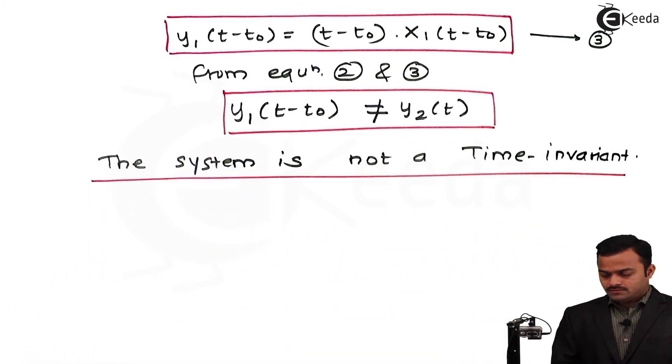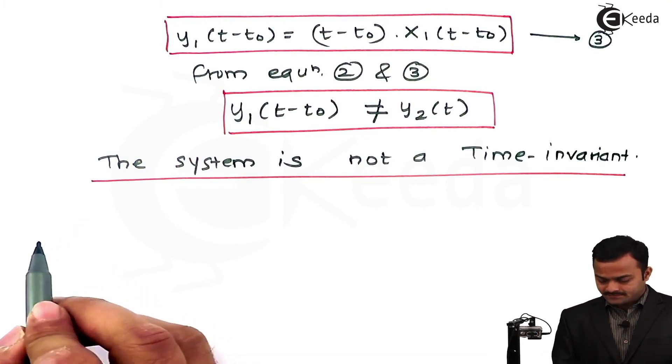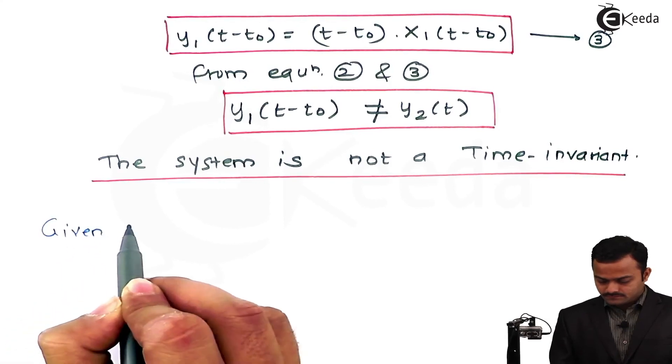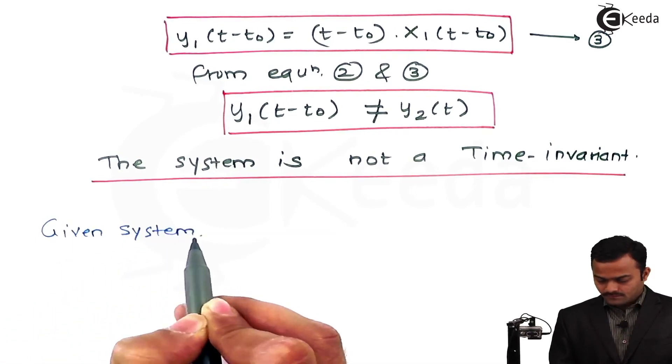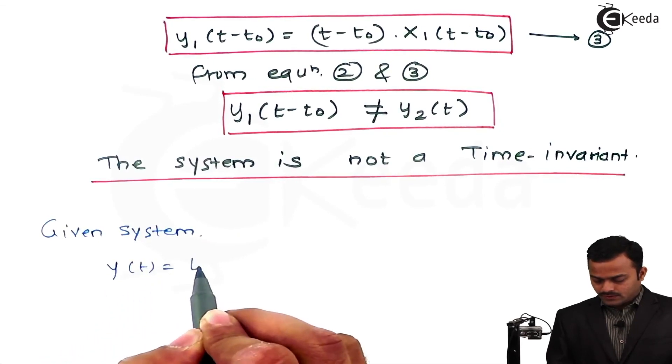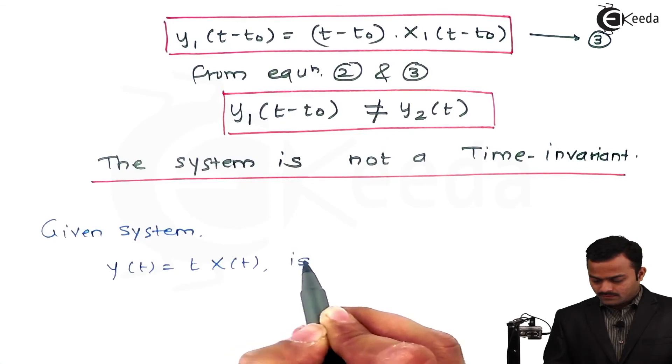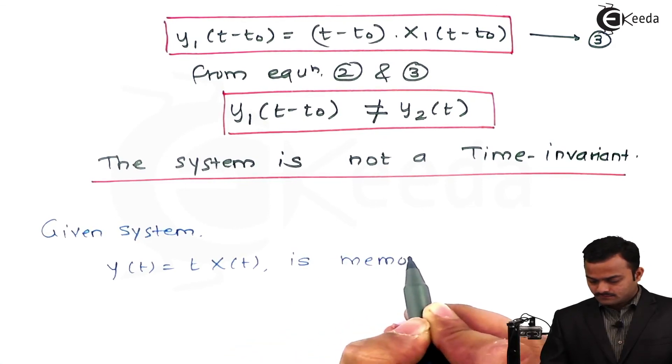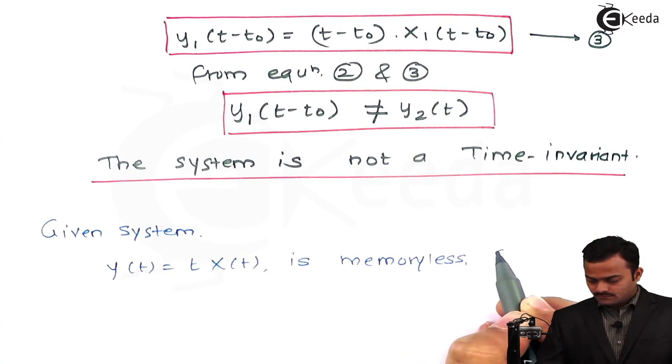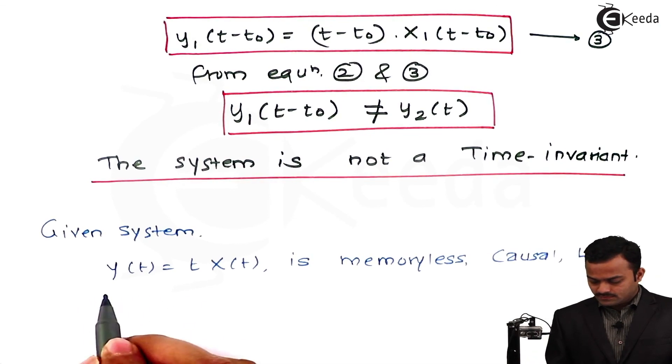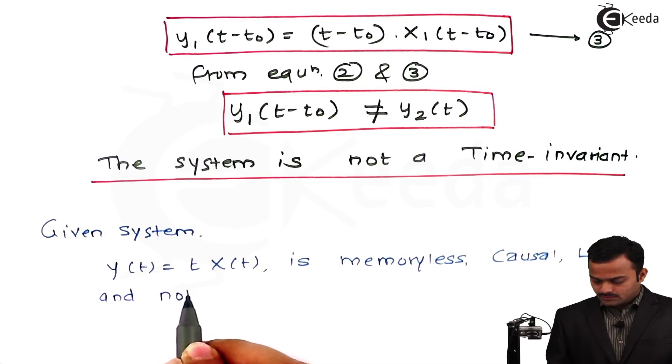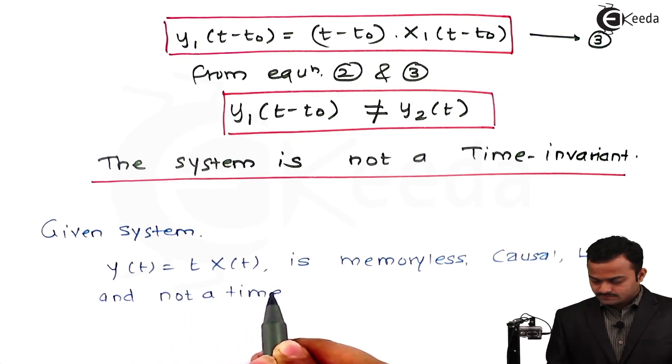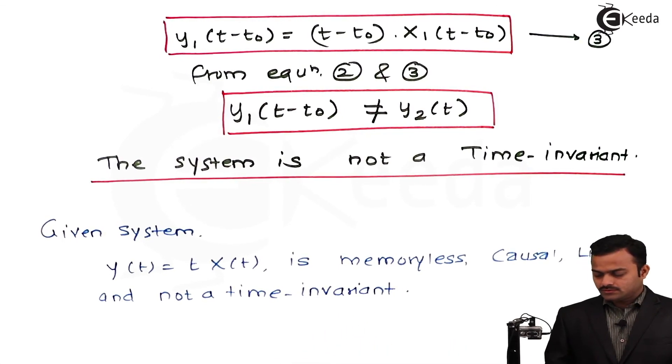So now, all the four properties we have discussed. Let's summarize. The given system y(t) = t·x(t) is memoryless, causal, linear, and not time invariant. So this is the conclusion for the problem that we have seen. Thank you.